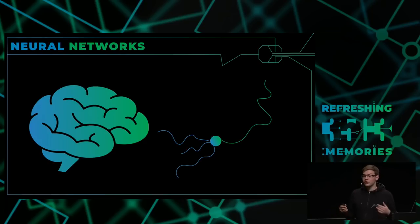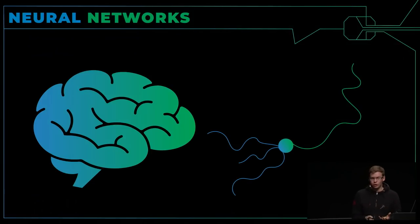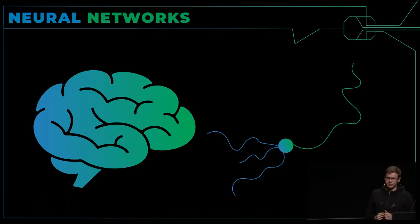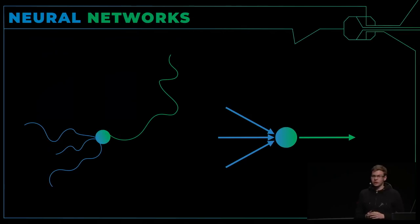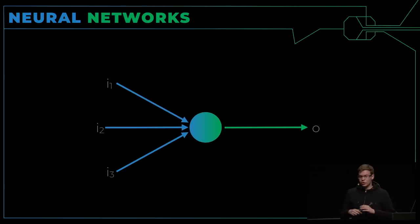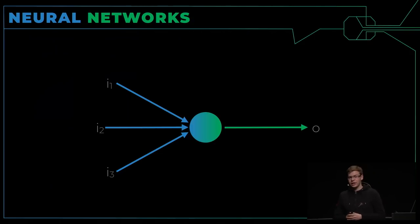Neuronale Netze sind inspiriert vom Gehirn, genau genommen von den Neuronen im Gehirn. Neuronen sind sehr kleine Objekte im Gehirn, die eine gewisse Menge an Eingaben in Ausgabe verwandeln. Die Eingaben sind üblicherweise elektrische Signale, und wenn die stark genug sind, senden sie auch ein elektrisches Signal raus. Das können wir modellieren im Computer: wir nehmen ein einzelnes Neuron mit drei Eingaben I1, I2, I3 und einer Ausgabe O.